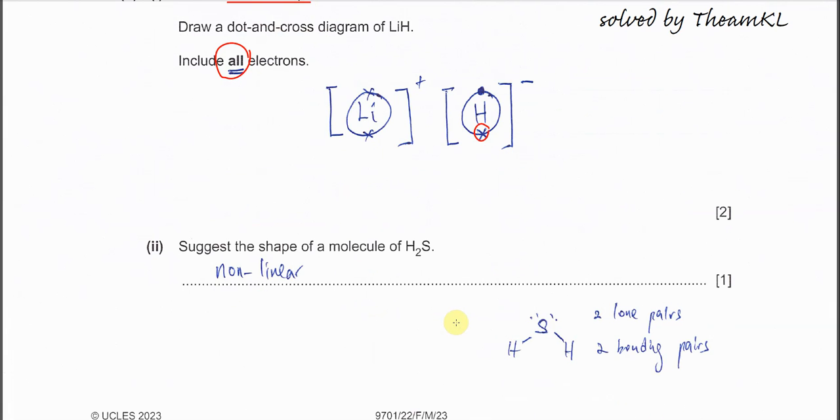Suggest the shape of H2S. The central atom is sulfur, which has two bonding pairs and two lone pairs. Lone pair repulsion is greater than bonding pair repulsion, compressing the bond angle. The concern is the shape. Lone pairs are invisible - we only see the atoms. Lone pairs aren't included in the shape description, so it's non-linear. When it's V-shaped or bent, just put 'non-linear.'